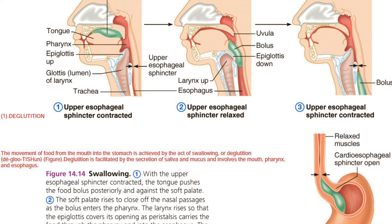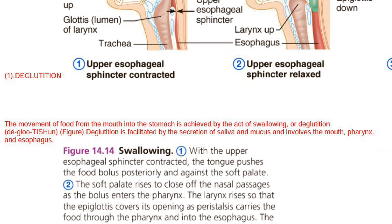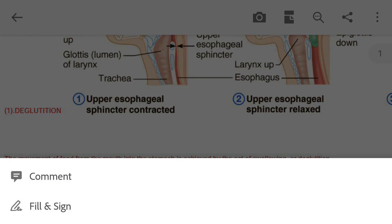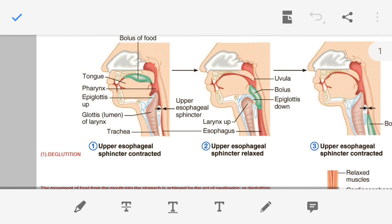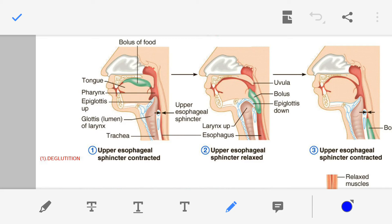The first point is the definition of swallowing. Swallowing is also known as deglutition. Daily we are taking our lunch, dinner, and breakfast — we are eating various kinds of food. The eating process, or taking food into our mouth, in biology is known as the process of ingestion. Once we have entered the food into the oral cavity or buccal cavity, we begin chewing.